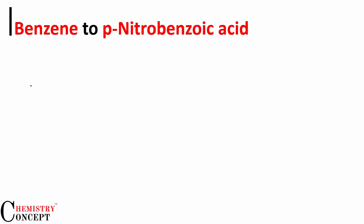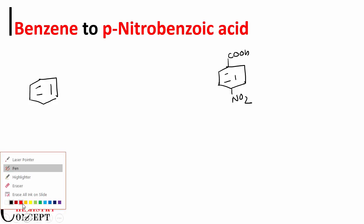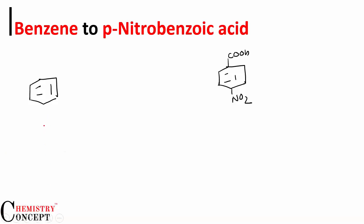Benzene to para-nitrobenzoic acid. As I always say, let's write down the formulas and structures of reactants and products first, and then figure out these steps. I have to introduce a carboxylic acid and a nitro group over the benzene ring. But I cannot introduce the nitro group first because it is a meta-directing group and will result in the meta product. And the carboxylic acid is also a meta-directing group, so we need to do this conversion in an indirect way.